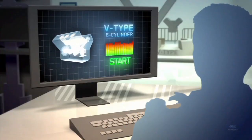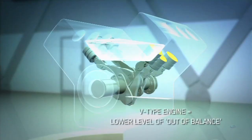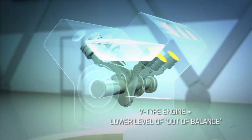V-Type engine pistons move in a V direction, so some of the inertia force is reduced, resulting in a slightly lower level of out of balance.